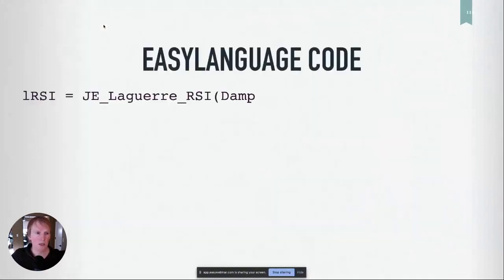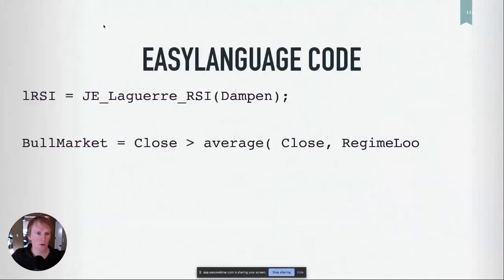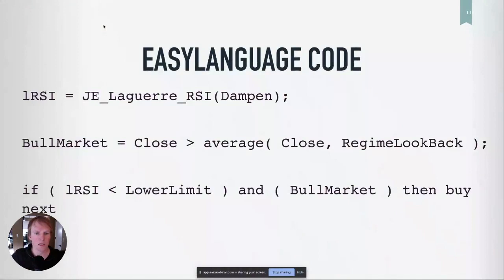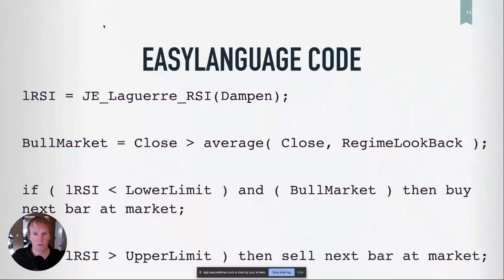The EasyLanguage code looked something like this. It's not much — it took me a little bit to code up, particularly because Ehlers was kind enough to provide the EasyLanguage code for the indicator. Then I could build a strategy out of it.